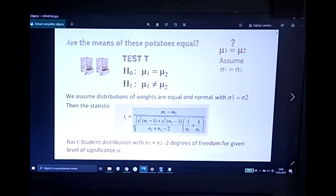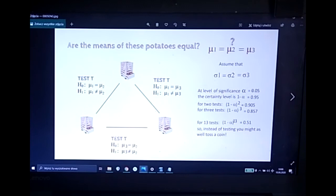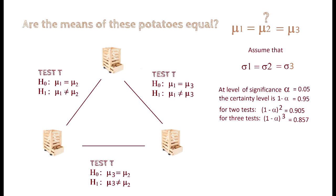But what happens if we have three kinds of potatoes? Then we have to make three tests. But if our level of significance is 0.05, then the certainty level is 1 minus alpha, which is 0.95. If we make two tests independently, then the certainty of our result is 0.90, because we have to multiply the two. And for three tests, the certainty of the result is 0.857. So far it's not a tragedy yet, but what happens if we have to perform 13 comparisons, 13 tests? Then the certainty of the result is, as it can be easily calculated, 0.51. So you might as well be tossing a coin.